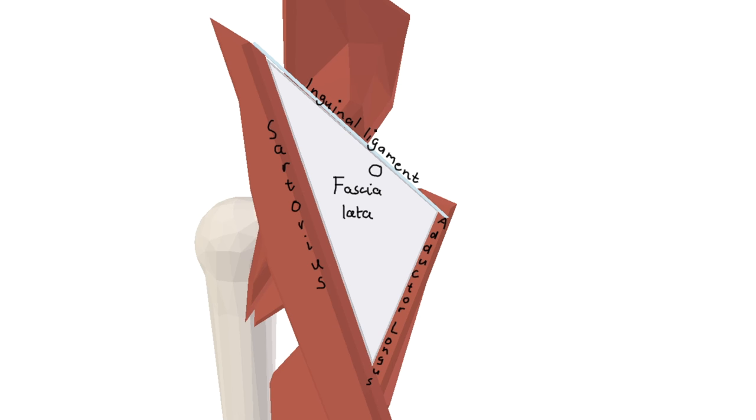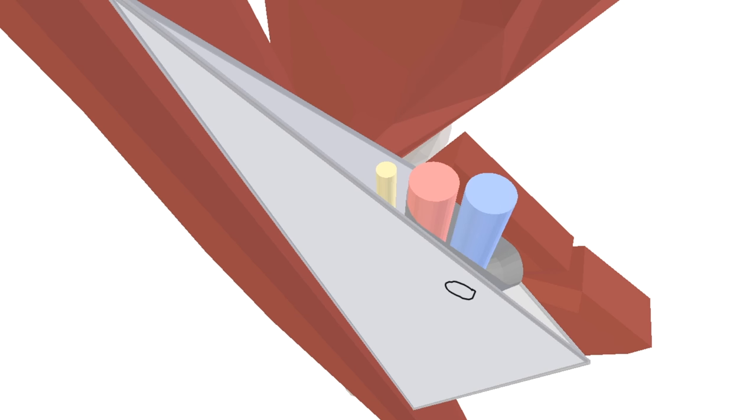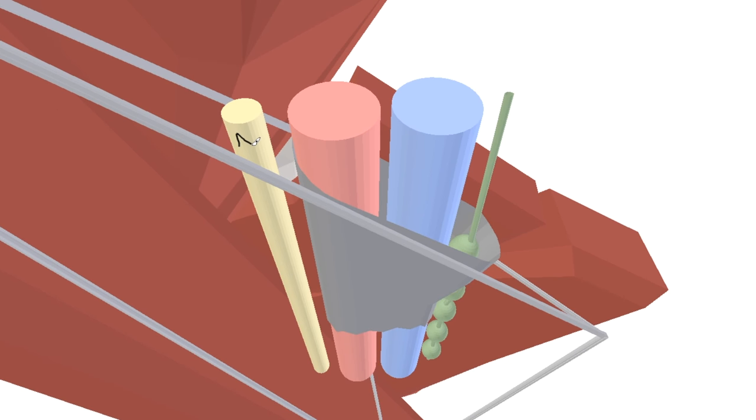And of course, the femoral triangle is open up the top to allow in its contents. We'll take out the inguinal ligament and bring them in here. Laterally, we have the femoral nerve. Next, we have a fascial compartment called the femoral sheath, which contains the femoral artery, femoral vein and the femoral canal.